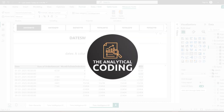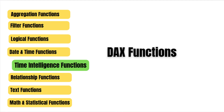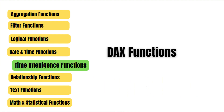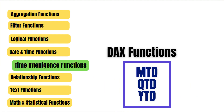Hey everyone, welcome back to Analytical Coding. I'm back with the time intelligence series — in Part 3 we will be learning how to calculate month-to-date, quarter-to-date, and year-to-date values in Power BI using DATESMTD, TOTALMTD, and their QTD and YTD counterparts. By the end of this video you will be confident to apply these in real reports and ace interview questions.